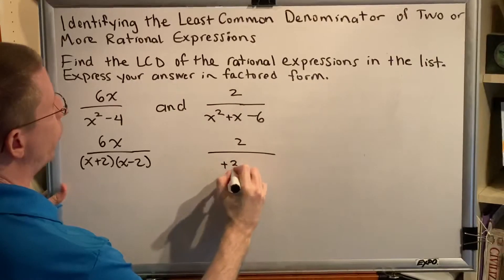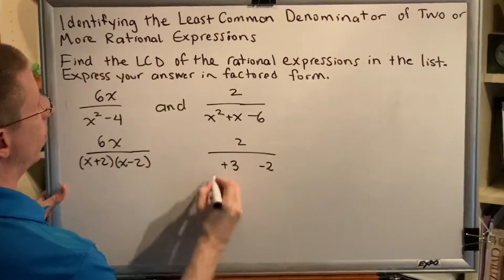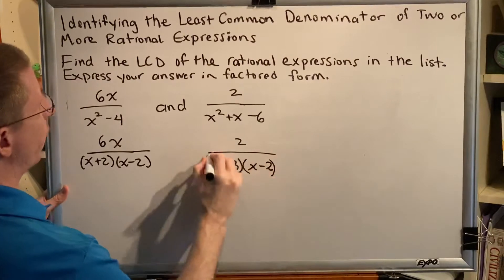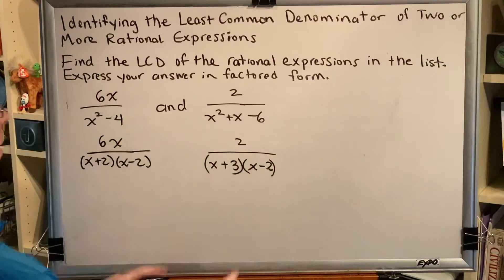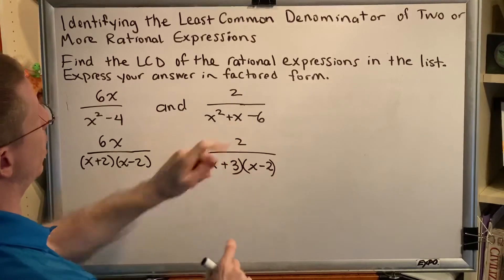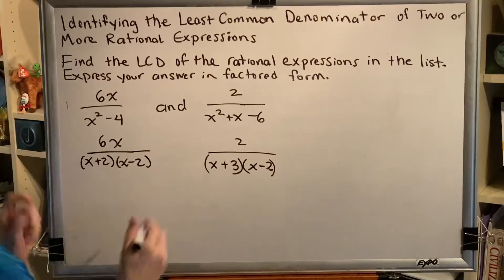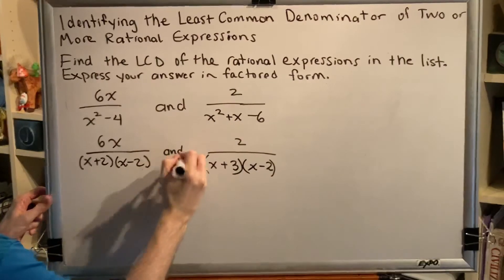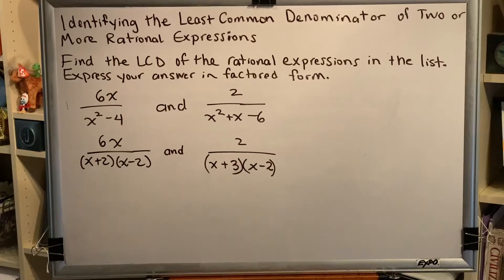That would be positive 3 and negative 2. Each one gets an x in front of it and then we make our factors. We can check with FOIL if we like. x squared minus 2x plus 3x makes plus x minus 6. So we've now done step 1.